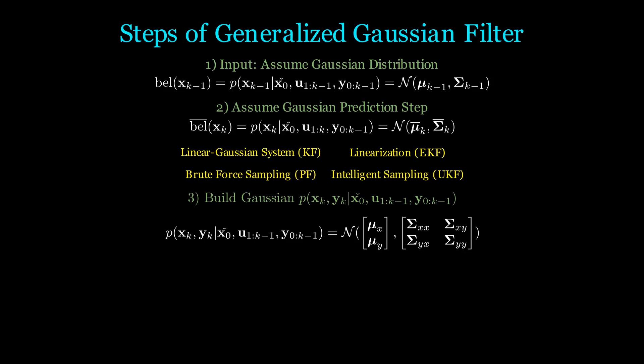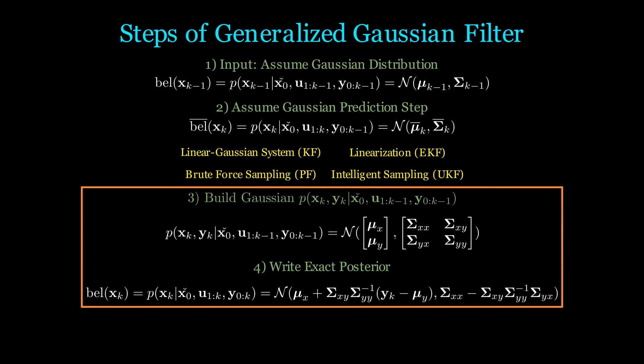Now here is where the magic happens. For Gaussians, once we have this joint probability density, we can immediately write out what bel(X_k) is. These two steps are where the generalized Gaussian filter comes in. Let's derive this key step now.